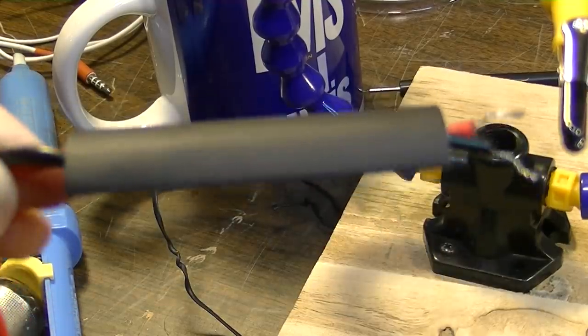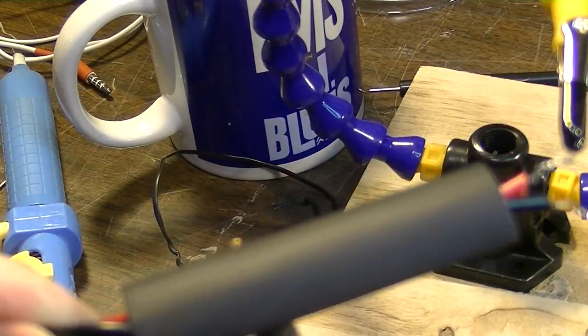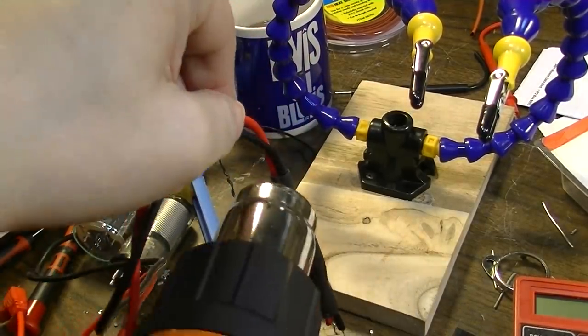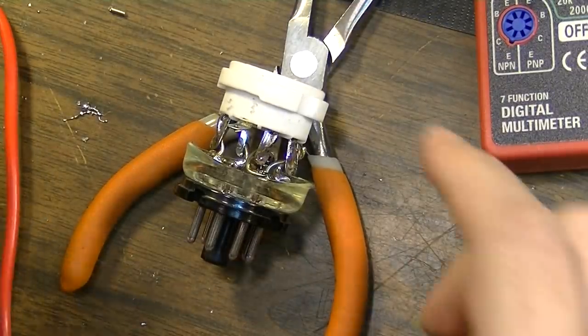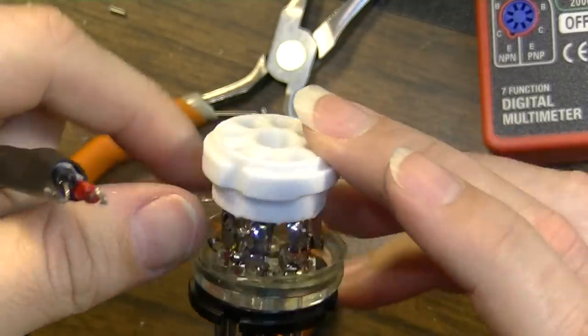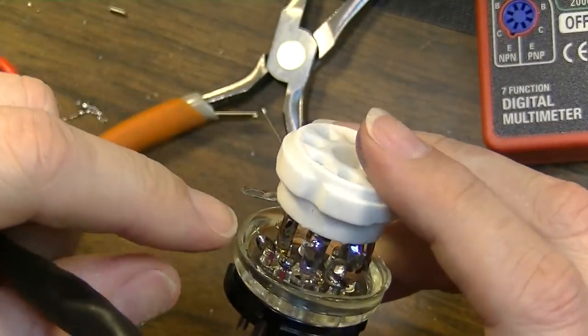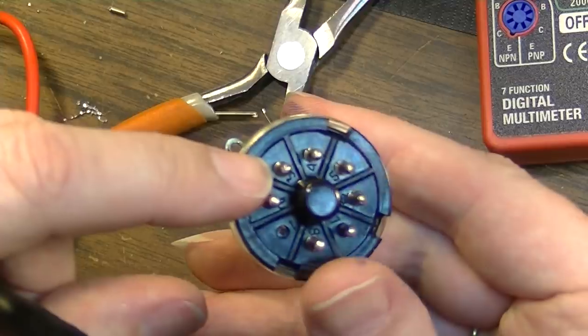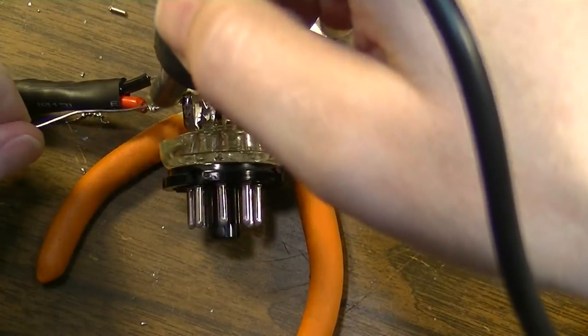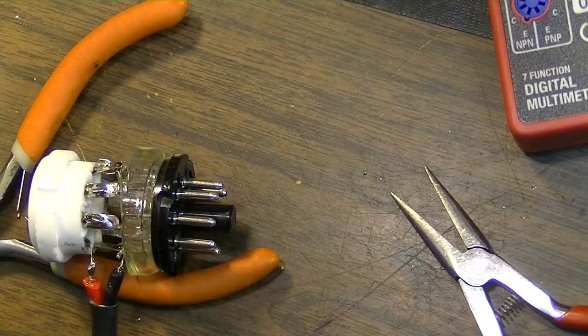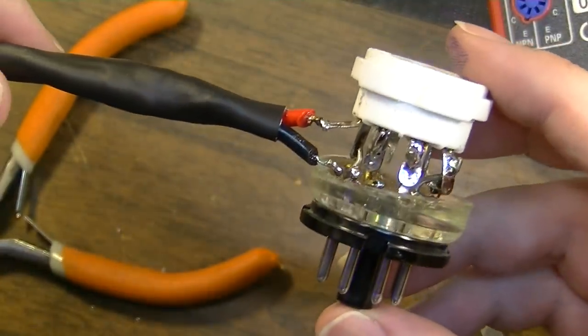Now we're going to take the ends of our probe and add some shrink tubing. Now we're going to solder one of our probes to the top that goes to the socket and we're going to solder the other probe down here to this lead that goes to pin 3 on the base. So there are those soldered on.